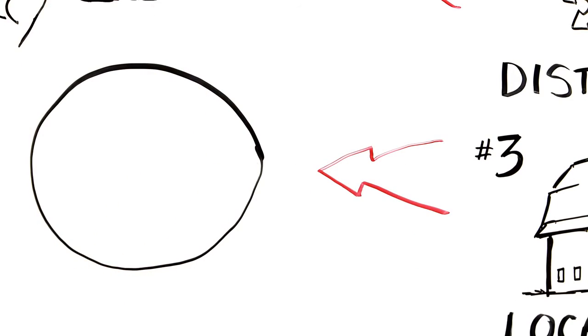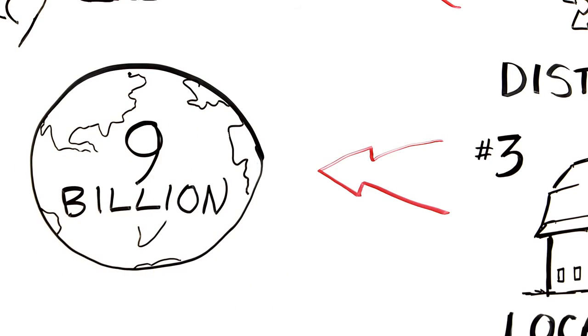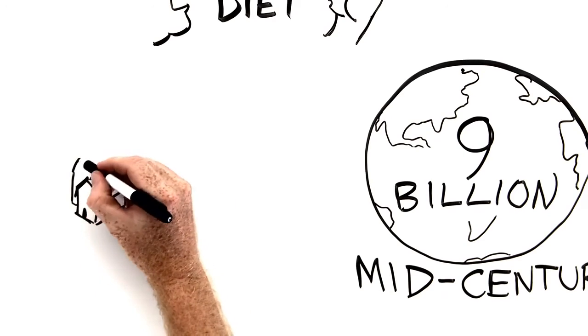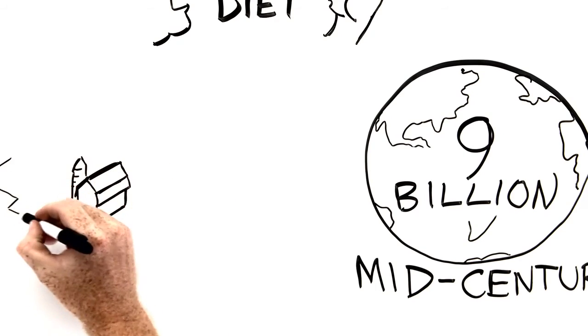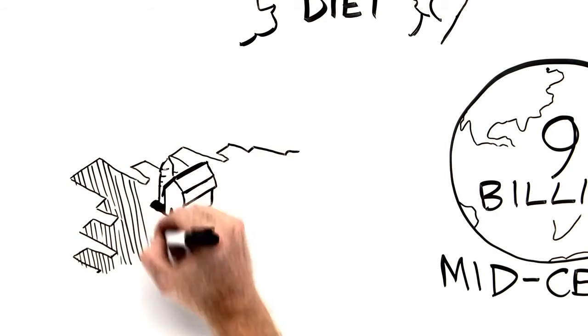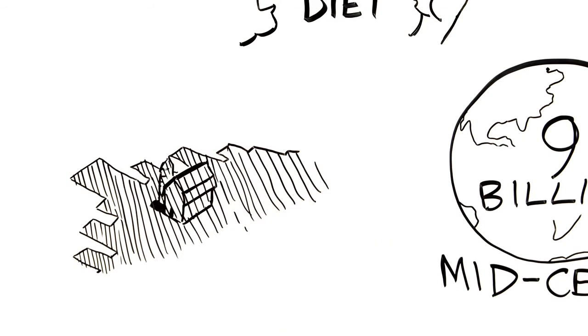But most daunting, perhaps, is the argument that with a world population poised to reach 9 billion by mid-century, there will never be a way for modern communities to feed themselves by means of local, small farms. Our cities are simply too big, our demands too great to be able to feed ourselves without relying on extremely intensive farms.